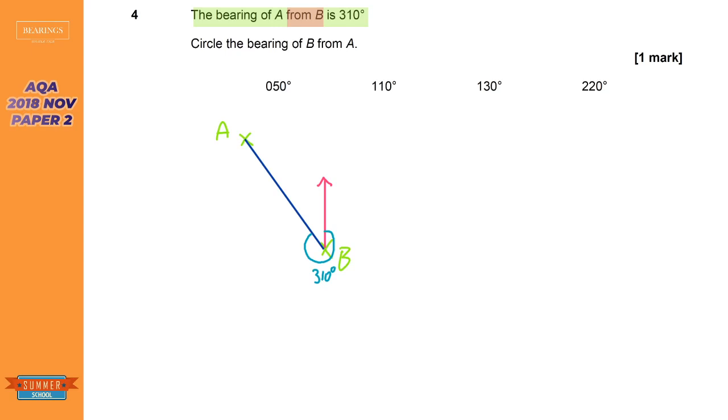That's the information given to us in the question. Now the actual question says circle the bearing of B from A. So this time we're actually at A. So I will need north line at A and we're calculating this angle here. Now this angle here is clearly less than 310. It looks like an obtuse angle and not a reflex angle. So the answer is not going to be just 310.